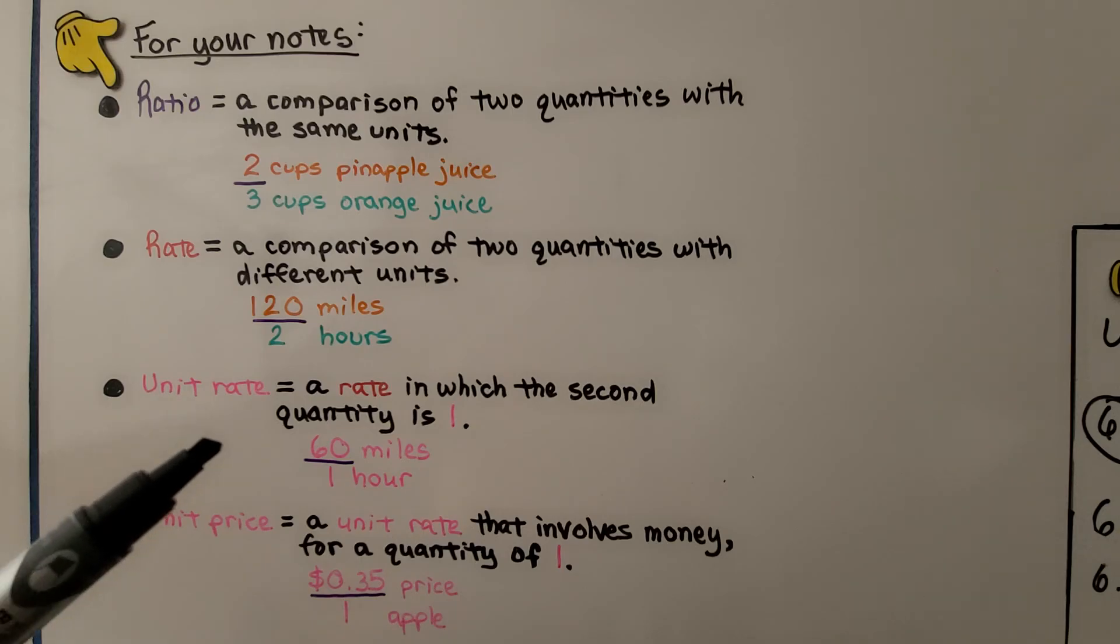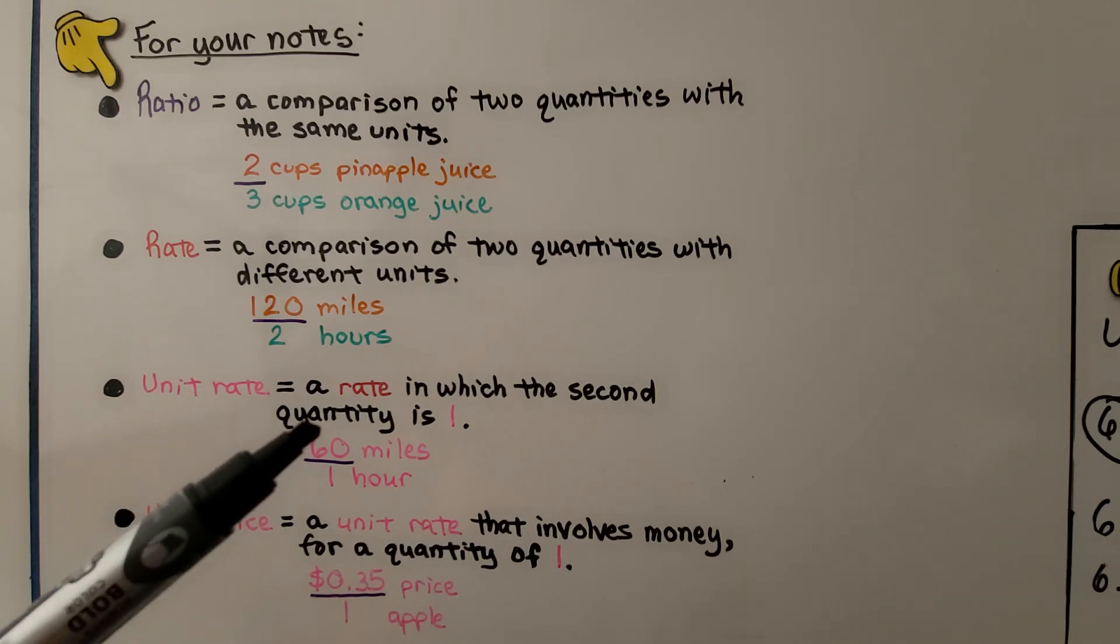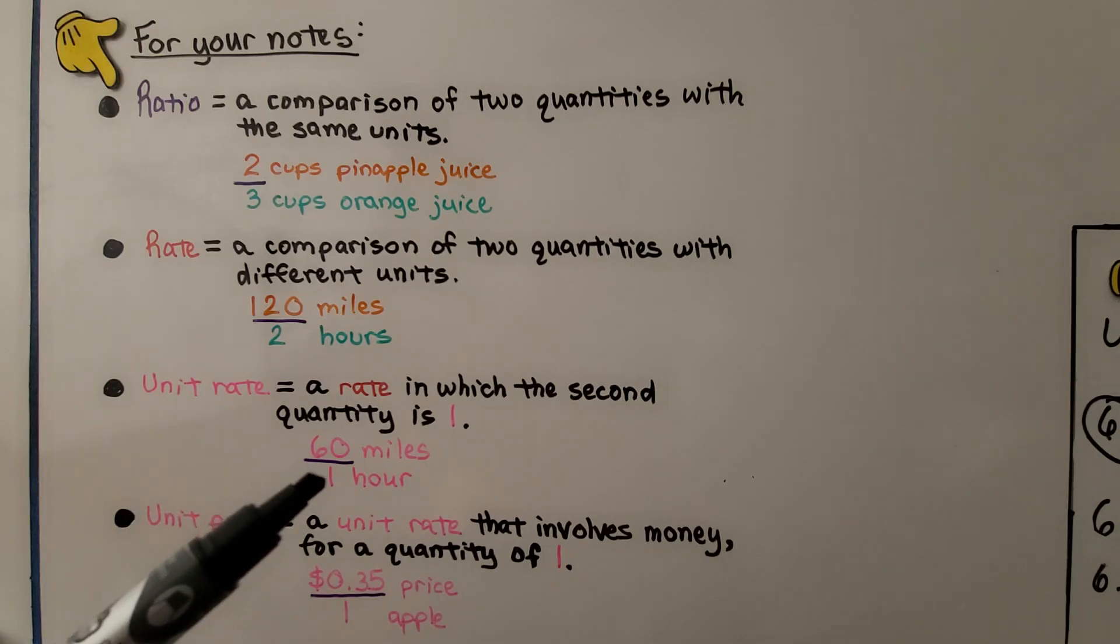A unit rate is a rate in which the second quantity is one. That would be going 60 miles in one hour. That's a unit rate. And a unit price is just a unit rate that involves money for a quantity of one. 35 cents for one apple.